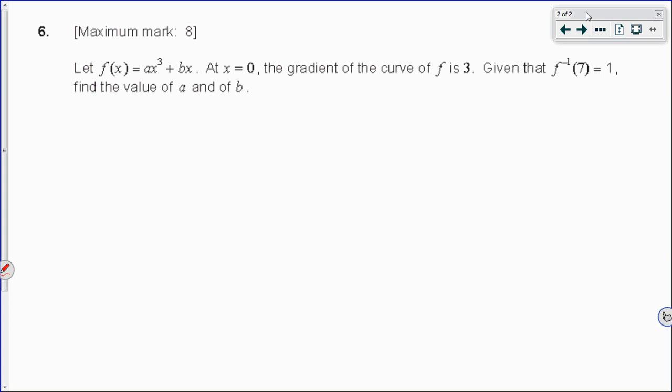First, we're given a function that has some variables in it: f of x equals ax to the third, so some coefficient times x to the third, plus bx, some coefficient times x. Ultimately, we're going to be asked to find that a and that b, and we have enough information given to us that we should be able to figure out exactly what they are.